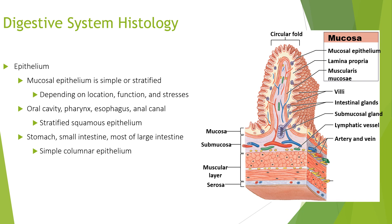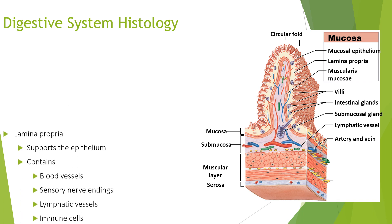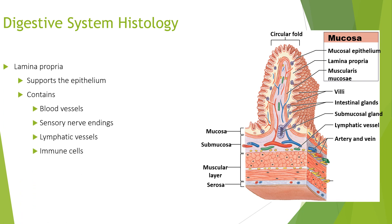The oral cavity, pharynx, esophagus, and anal canal contain stratified squamous epithelium, while the stomach, small intestine, and most of the large intestine have simple columnar epithelium. The lamina propria supports the epithelium and contains blood vessels, sensory nerve endings, lymphatic vessels, and immune cells.